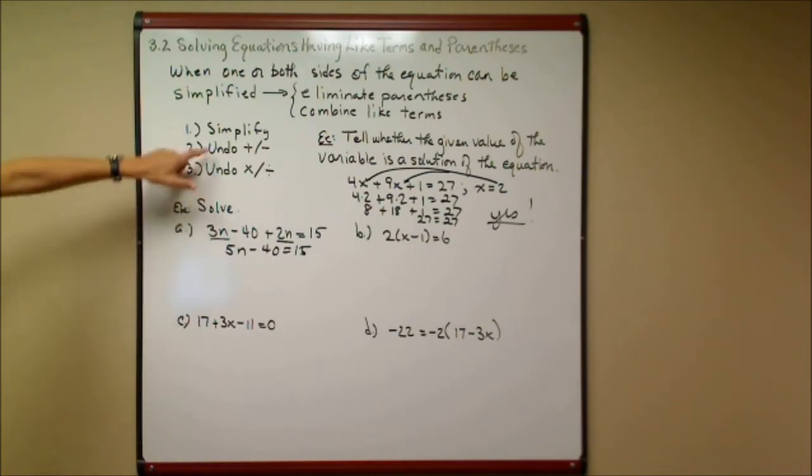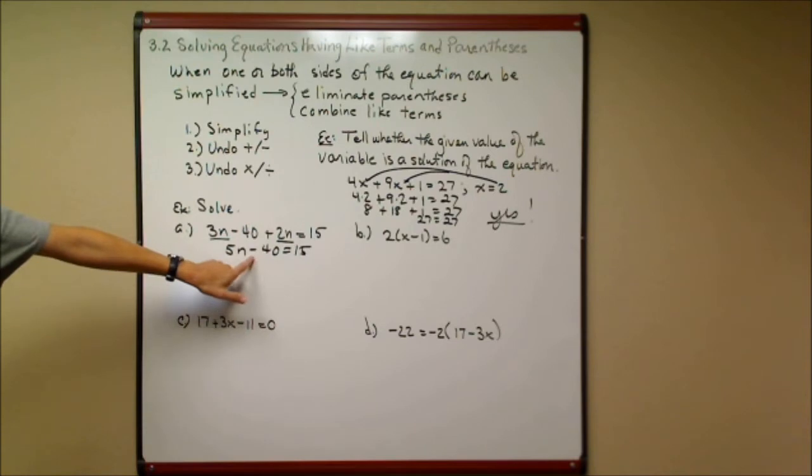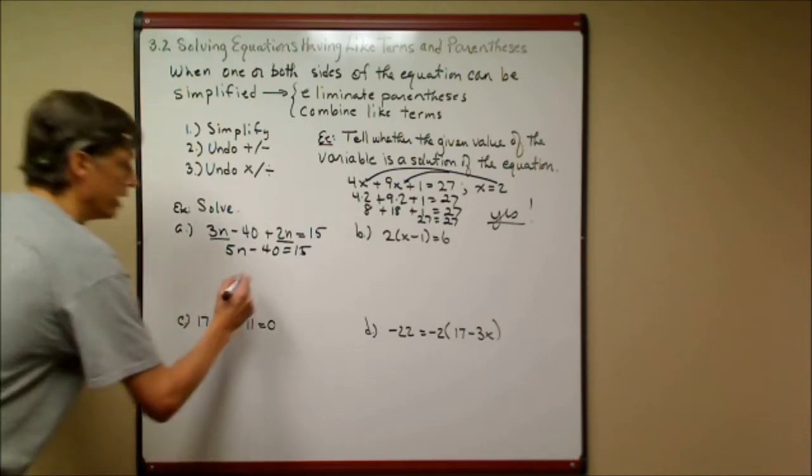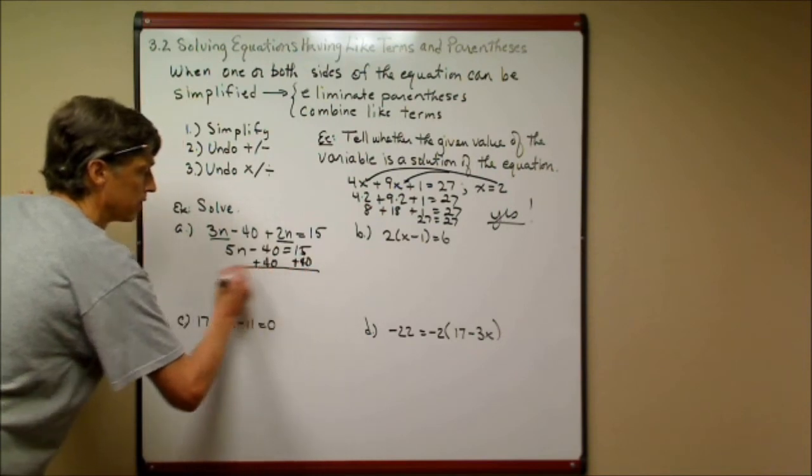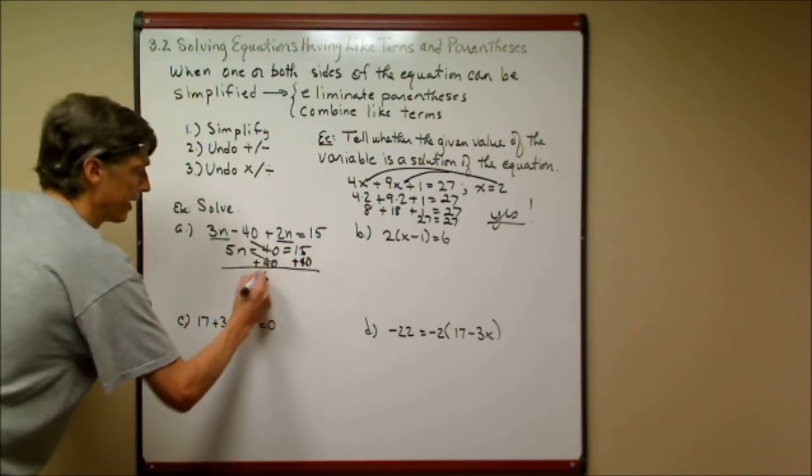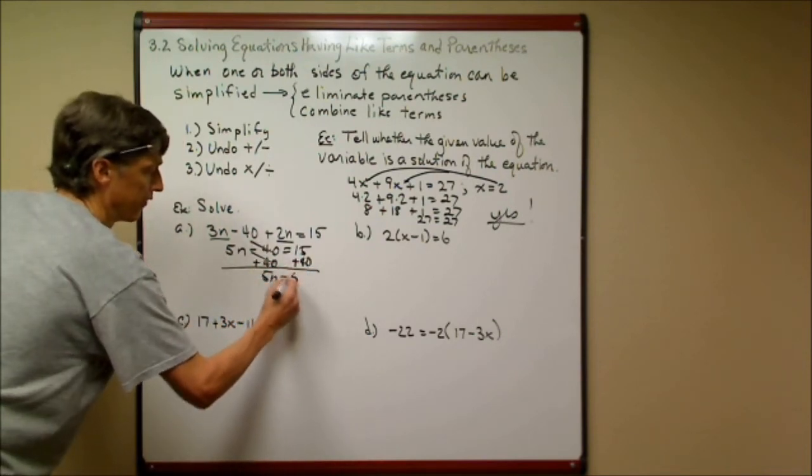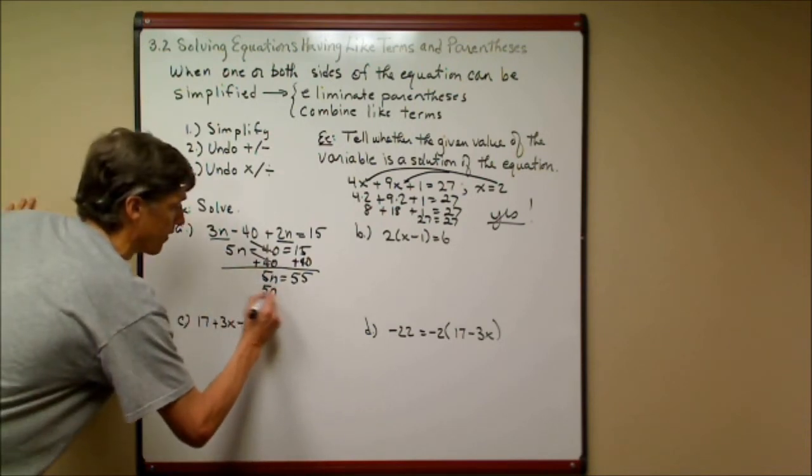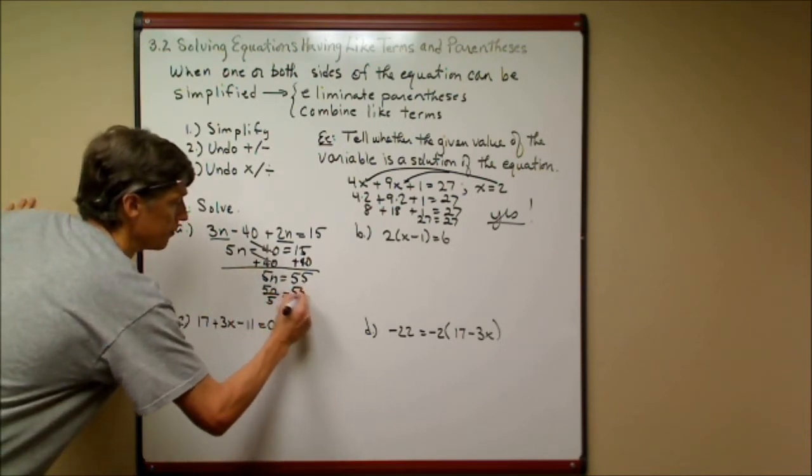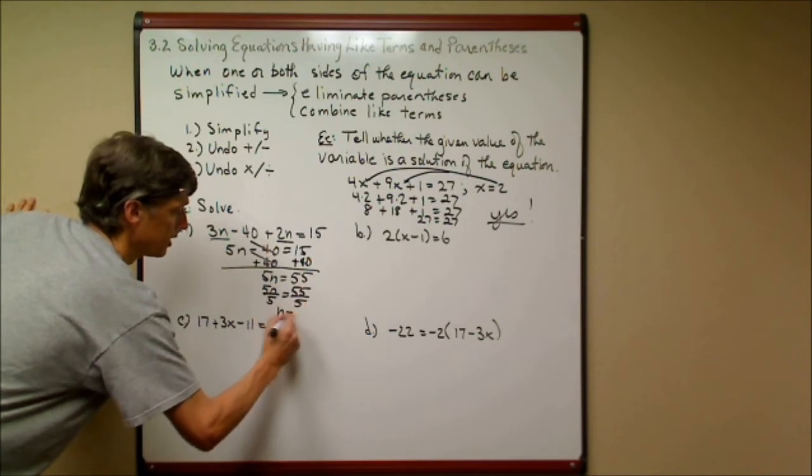Now I'm going to solve this by undoing any adding or subtracting. That means I've got to get rid of the minus 40. And to do that, I'm going to use the little shortcut notation. I'm going to add 40 to both sides. And I get 5n is equal to, looks like 55. And now I'm going to finish this off.